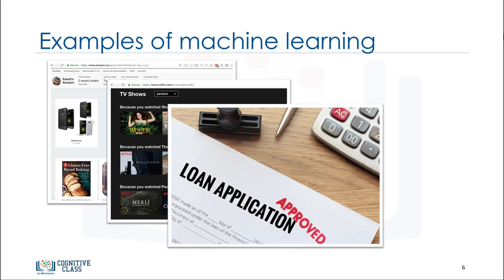They use machine learning to predict the probability of default for each applicant, and then approve or refuse the loan application based on that probability.